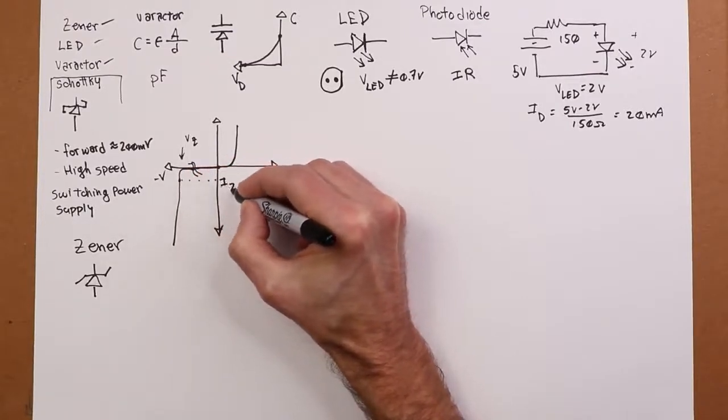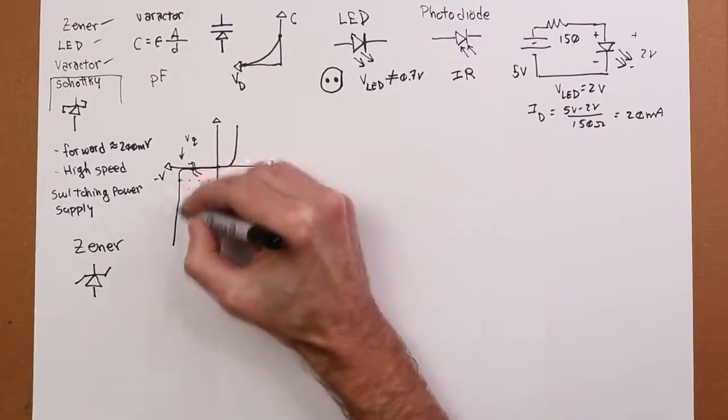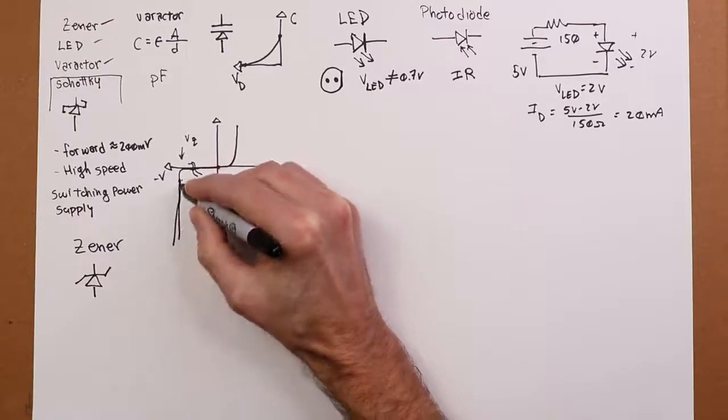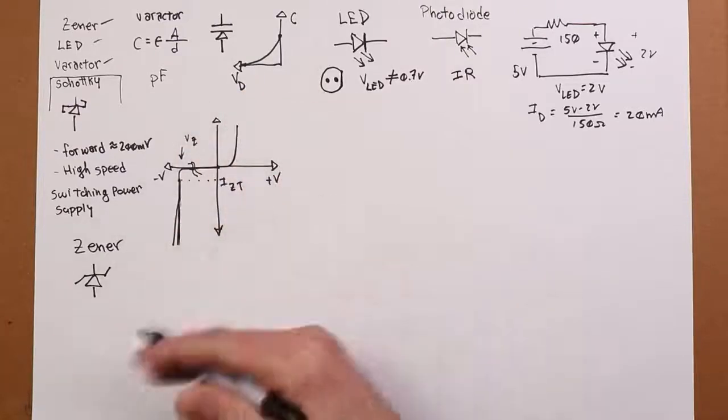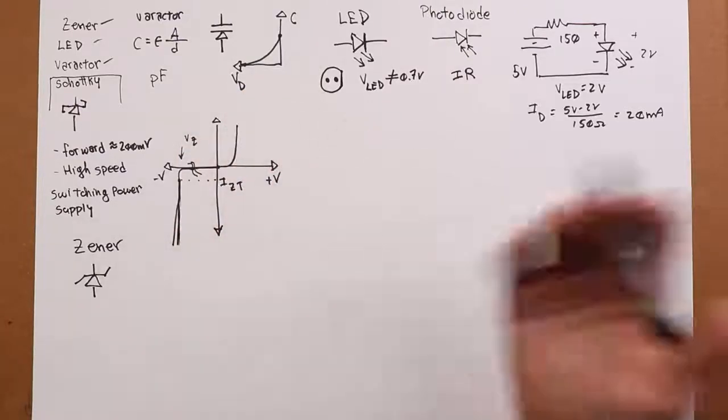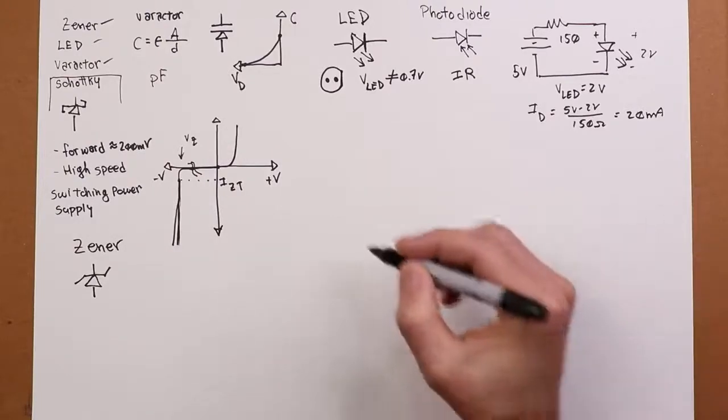And there will be a value, IZT, the Zener test current, above which you could assume this thing is pretty much straight up and down, better than I've drawn it, where you get that particular value, that 5.1 or 3.3 or whatever it is. So as an example to use this, I'm going to stick with the little single resistor kind of thing over here just to keep it straightforward.